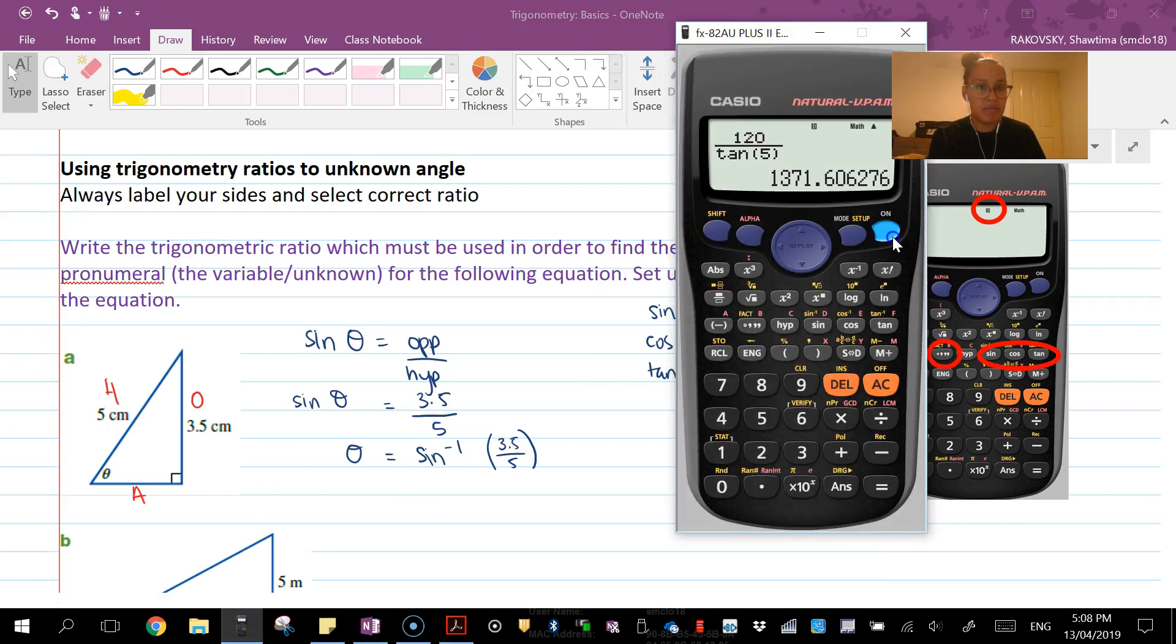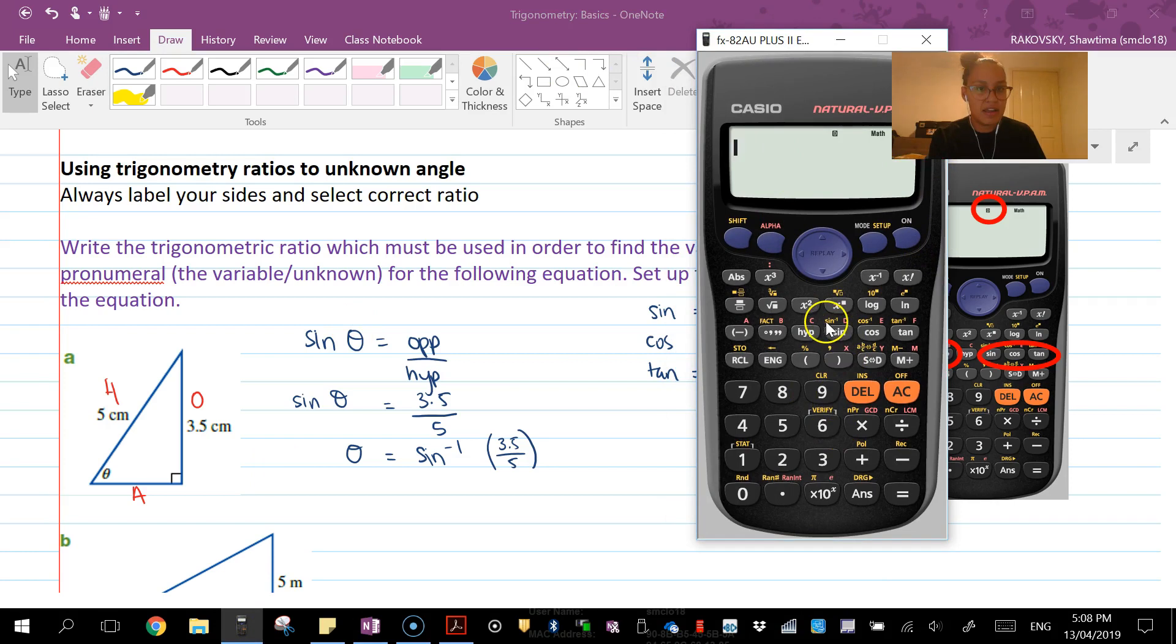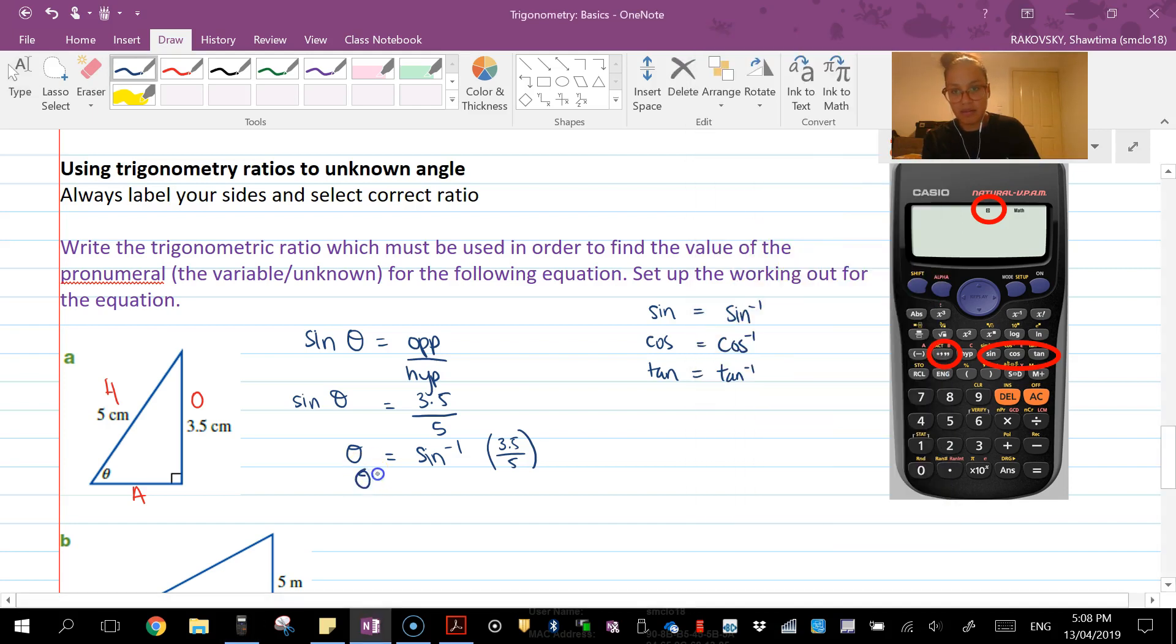I'm going to bring up my calculator. Here's my calculator. Above sine, cosine, and tan are those to the power of negative 1, using inverse operations. I'm going to go shift sine. I can put that in as a fraction: 3.5 over 5. Make sure you close the brackets, or you'll get a syntax error.